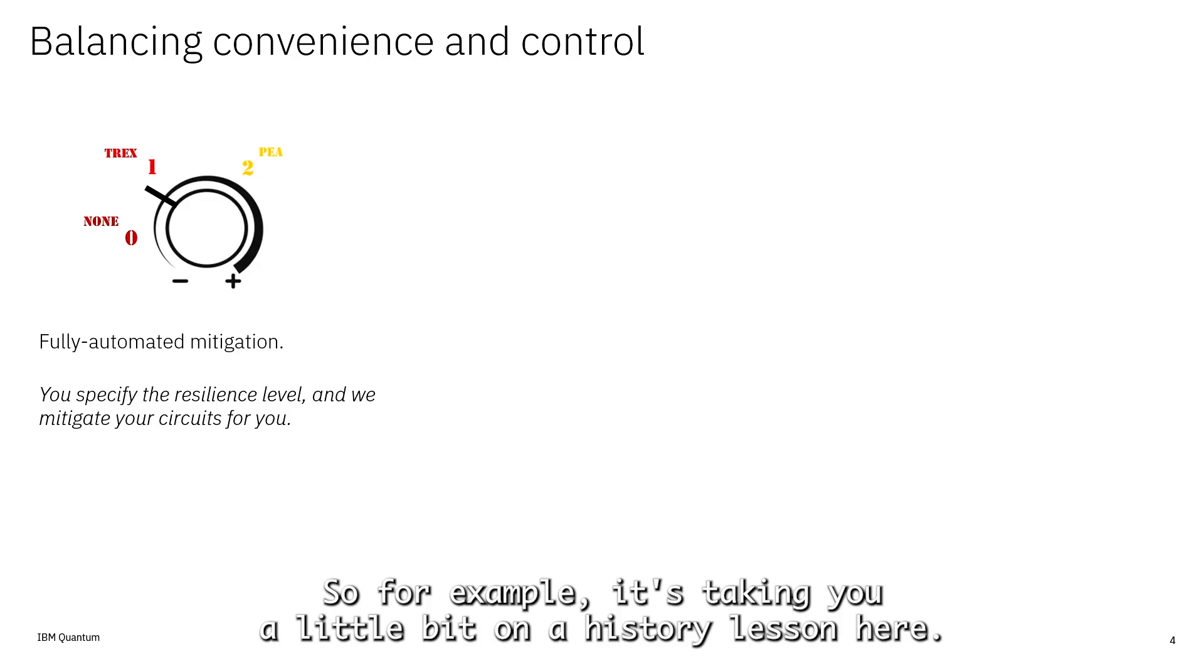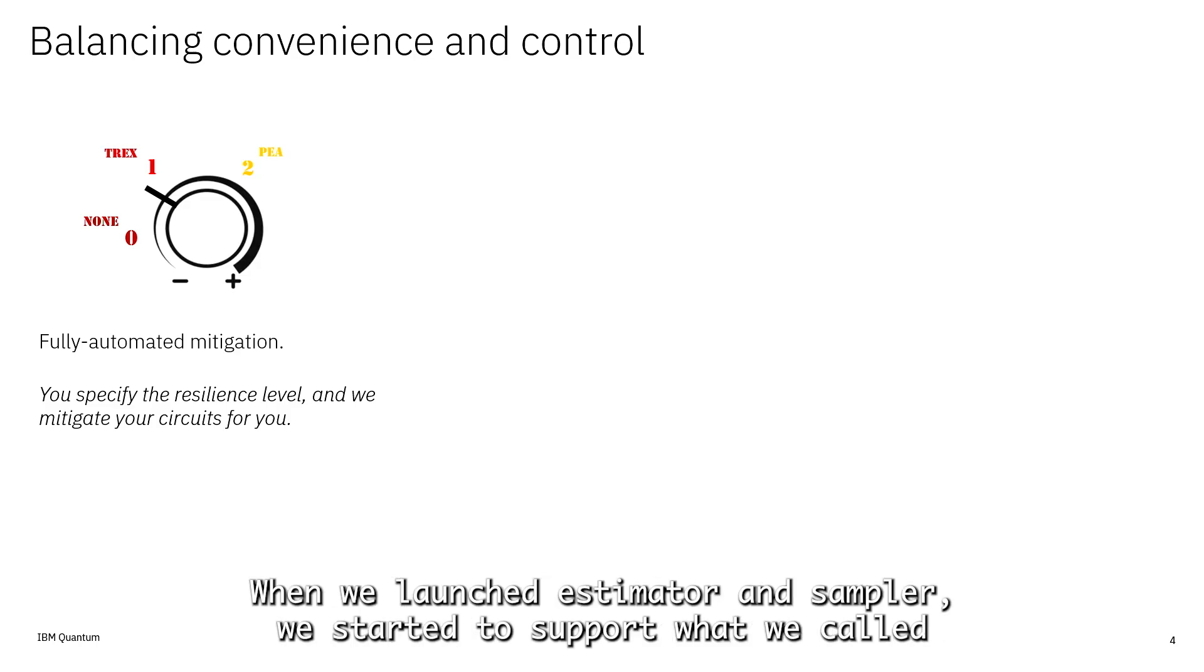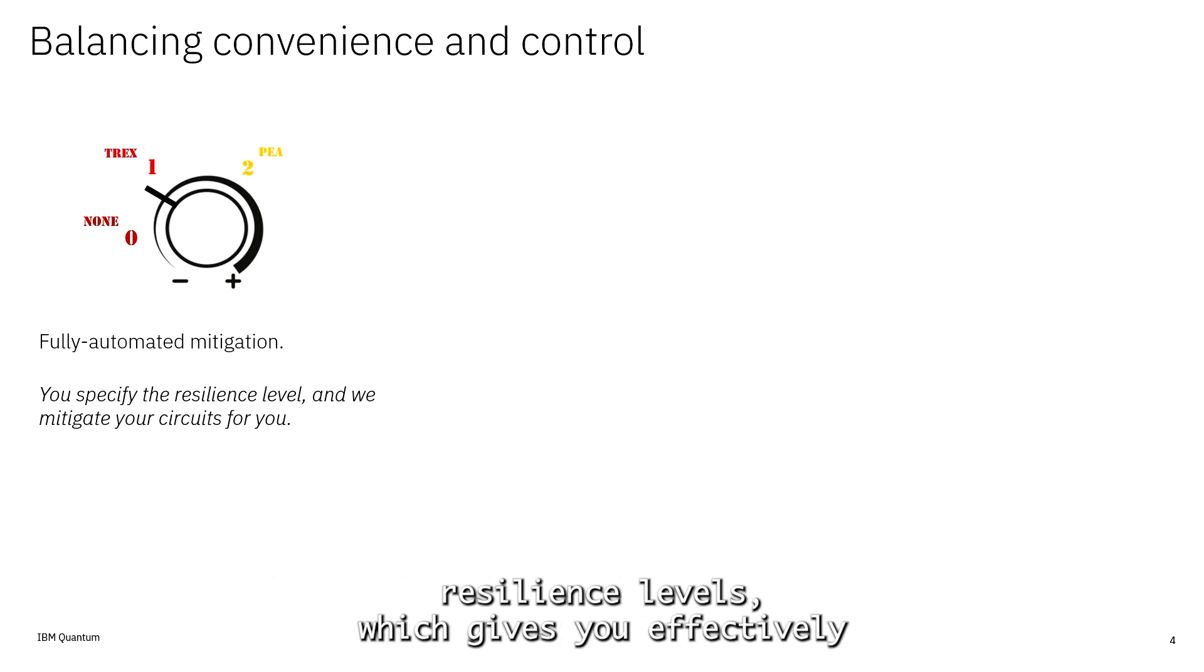Taking you a little bit on a history lesson: when we launched estimator and sampler, we started to support what we called resilience levels, which gives you effectively a cost-accuracy trade-off at very distinct levels, not too dissimilar to how you use the transpiler today.